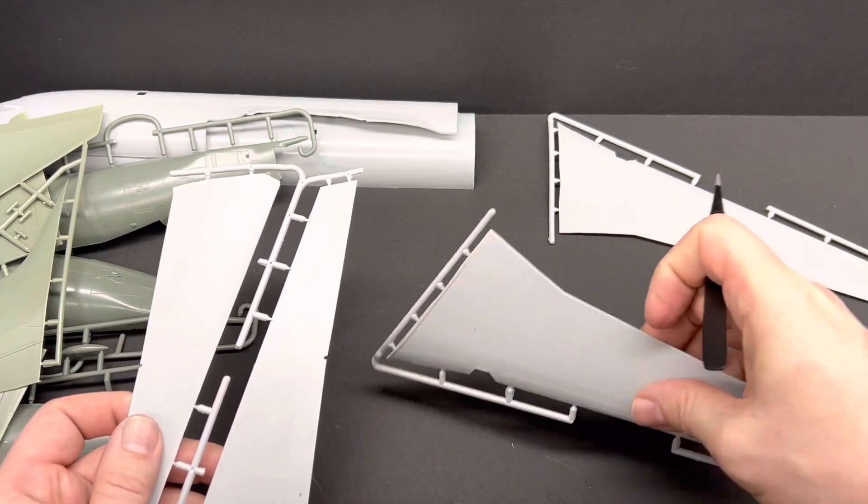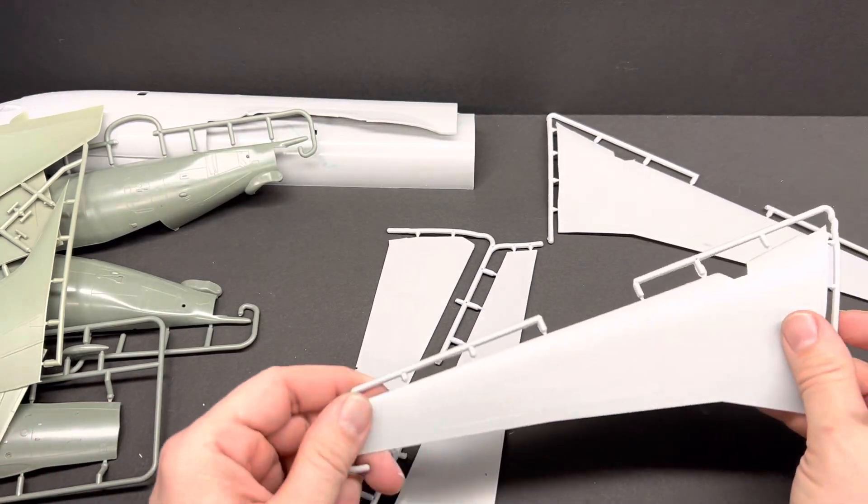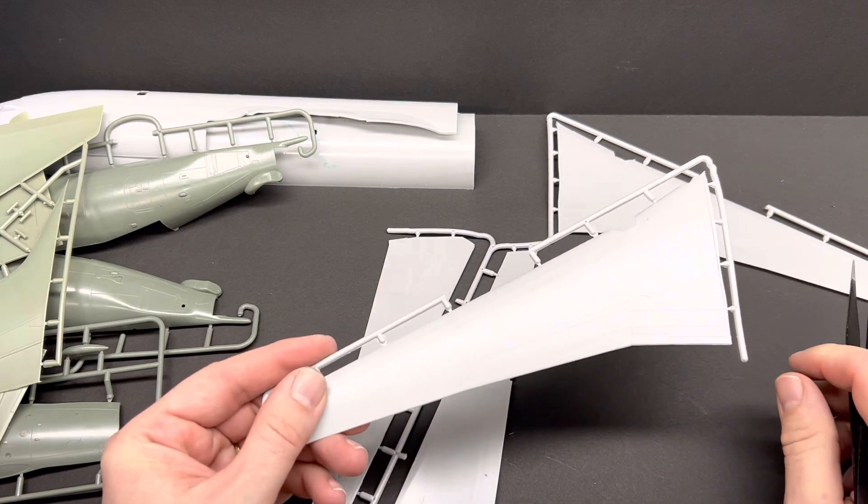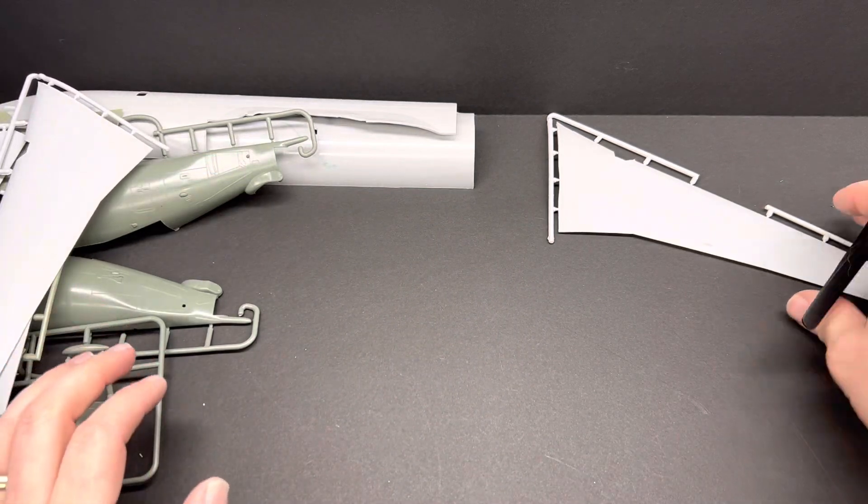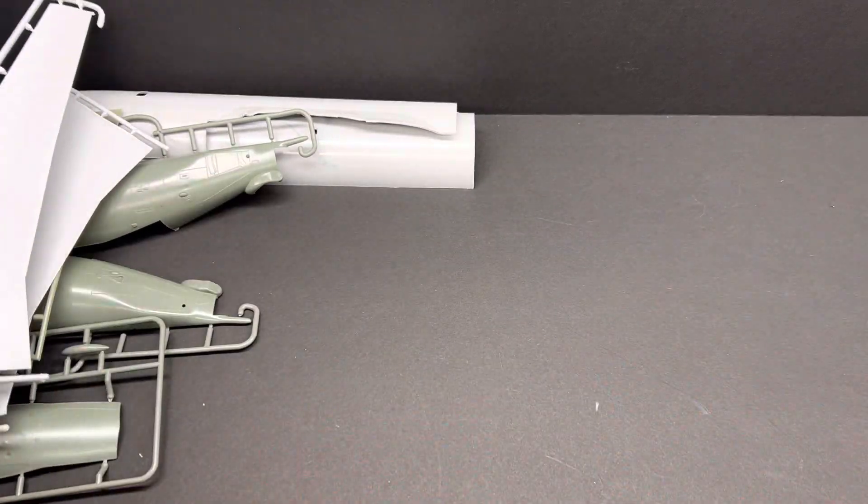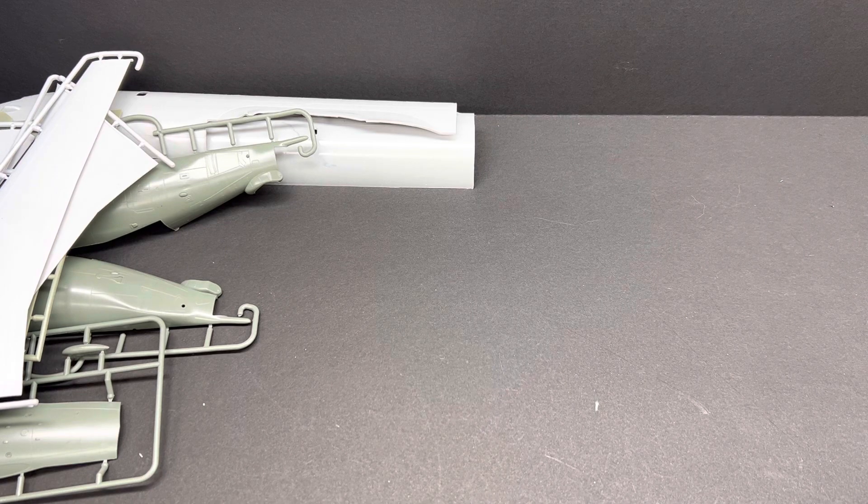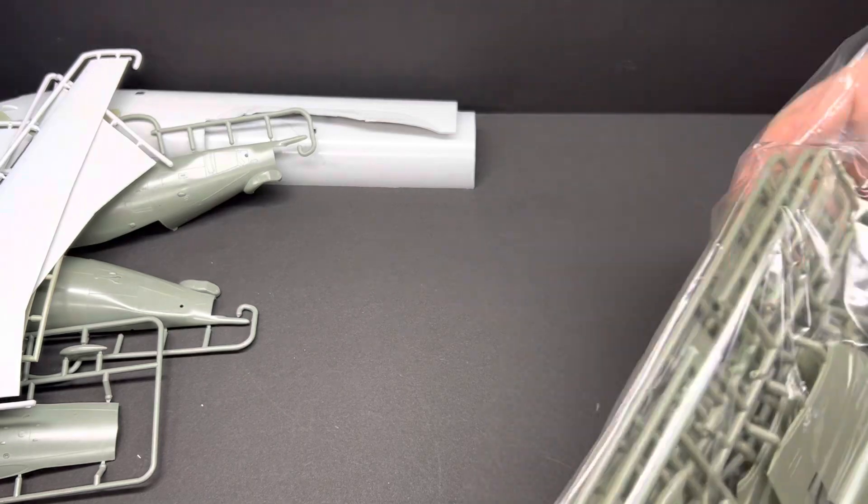What would be really nice, again, would probably cost a ton of money for BPK to do this, but somebody like ResKit. Flaps for these puppies. Flaps and slats. Might have to redo the entire wing to get that done. But, that's okay. All right. Let's take a look. Another breaking bag situation here.